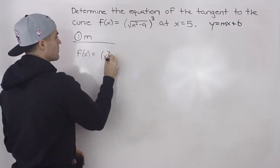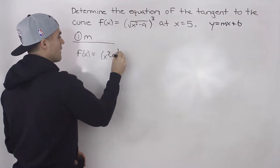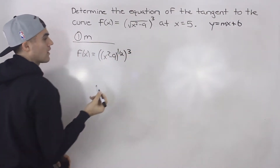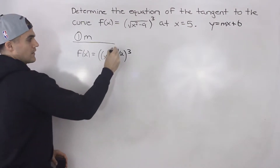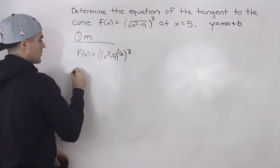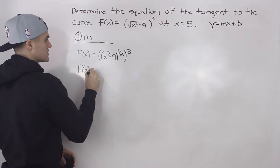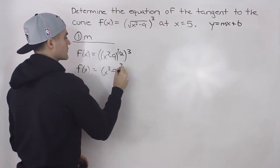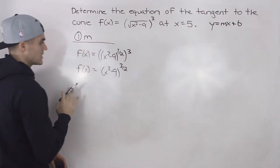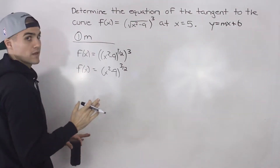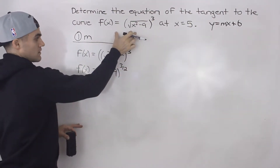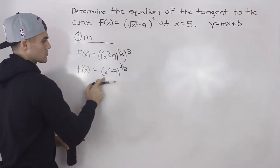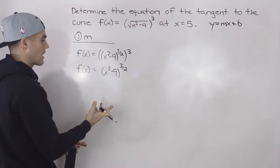So we'd have x squared minus 9 to the power of a half, and then that is raised to the power of 3. Notice we can just multiply those exponents, giving us x squared minus 9 to the power of 3 over 2. We haven't done any differentiation yet — we just manipulated the function to get a simpler form to derive.